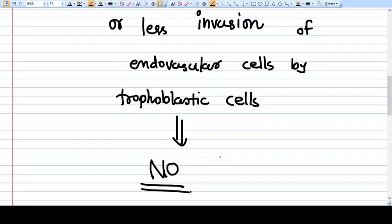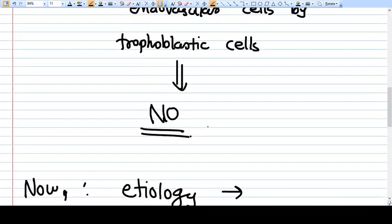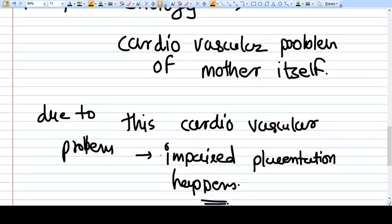What recent research says is that no, it's not because of the impaired placentation. It's because of the endogenous cardiovascular problem with the mother. That's why the placental impairment is there and that's why the preeclampsia is there. So now the shift from placenta to the mother is being recognized. So you need to stay updated with all those things that come in the recent research papers.